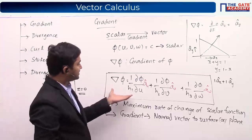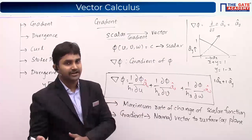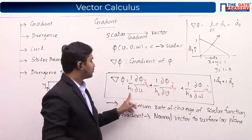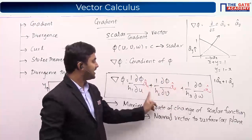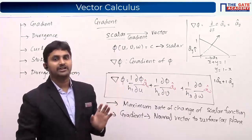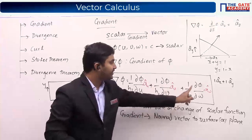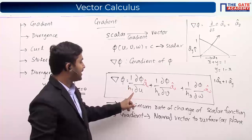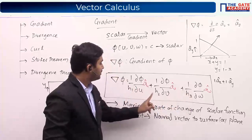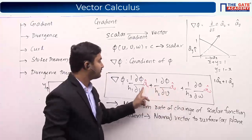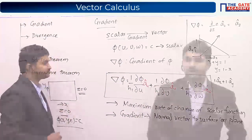For the Cartesian coordinate system: u,v,w = x,y,z and h1=h2=h3=1, giving del·φ = (∂φ/∂x)a_x + (∂φ/∂y)a_y + (∂φ/∂z)a_z. For cylindrical: coordinates ρ,φ,z with h1=1, h2=ρ, h3=1, and directions a_ρ, a_φ, a_z. For spherical: coordinates r,θ,φ with h1=1, h2=r, h3=r·sinθ, and directions a_r, a_θ, a_φ.